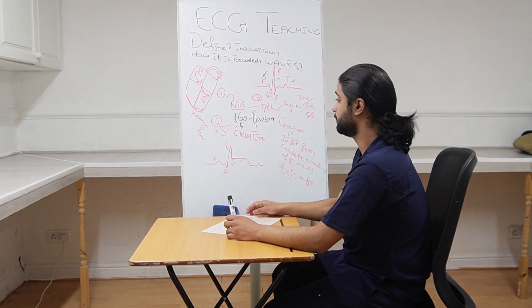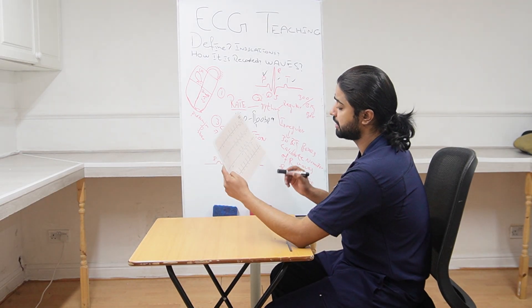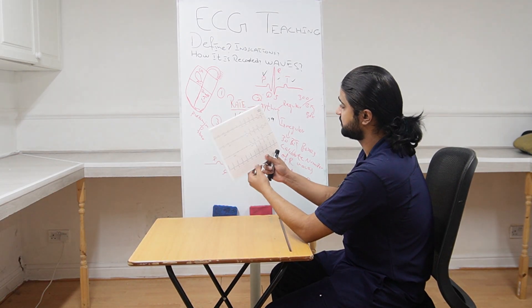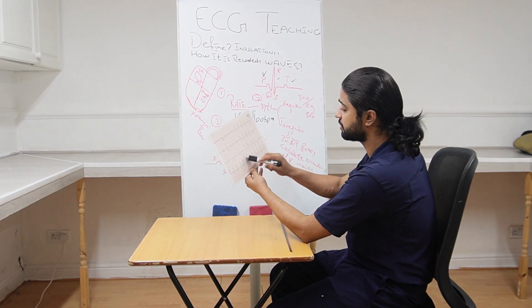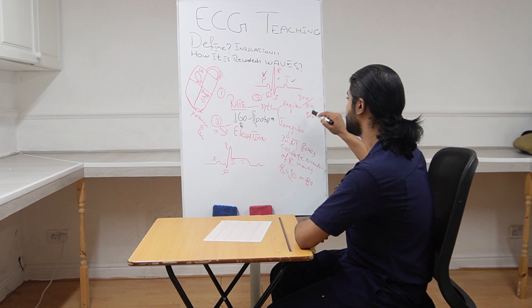How to calculate the rate if rhythm is regular? Simple. Calculate the number of big boxes between two R waves, and then 300 divided by the number of big boxes.